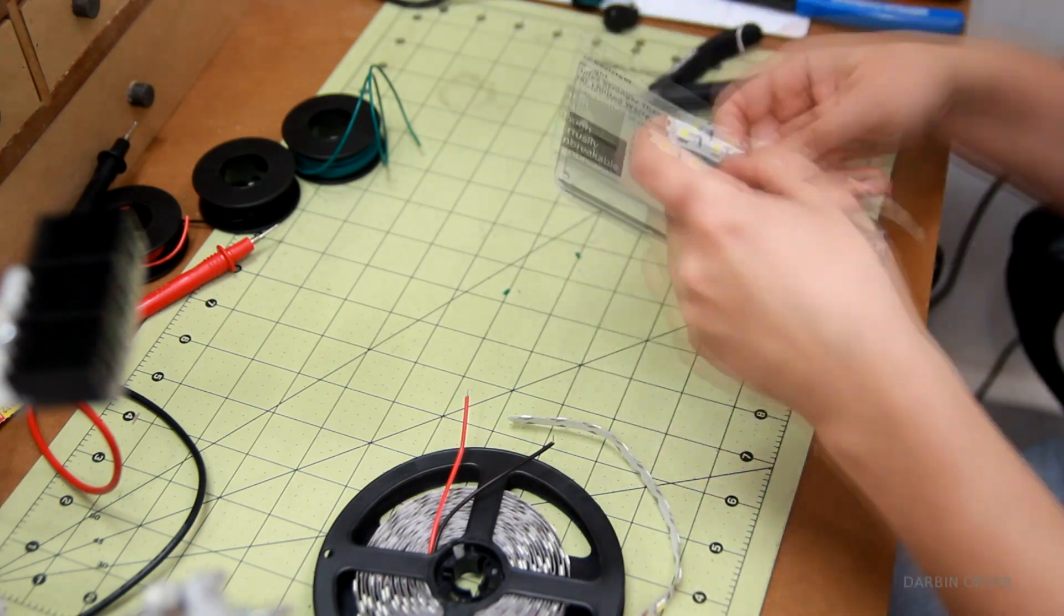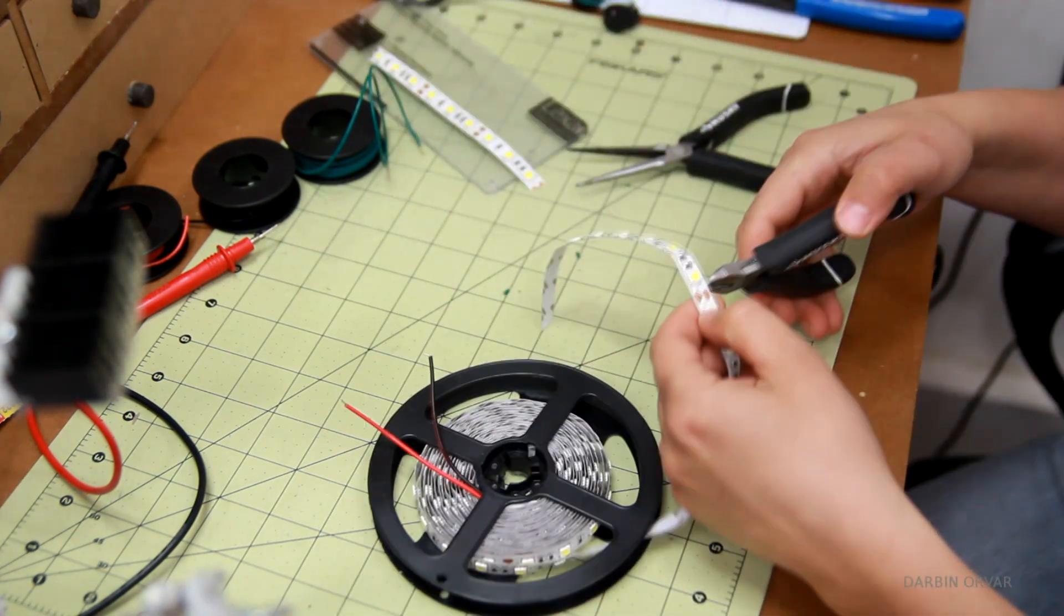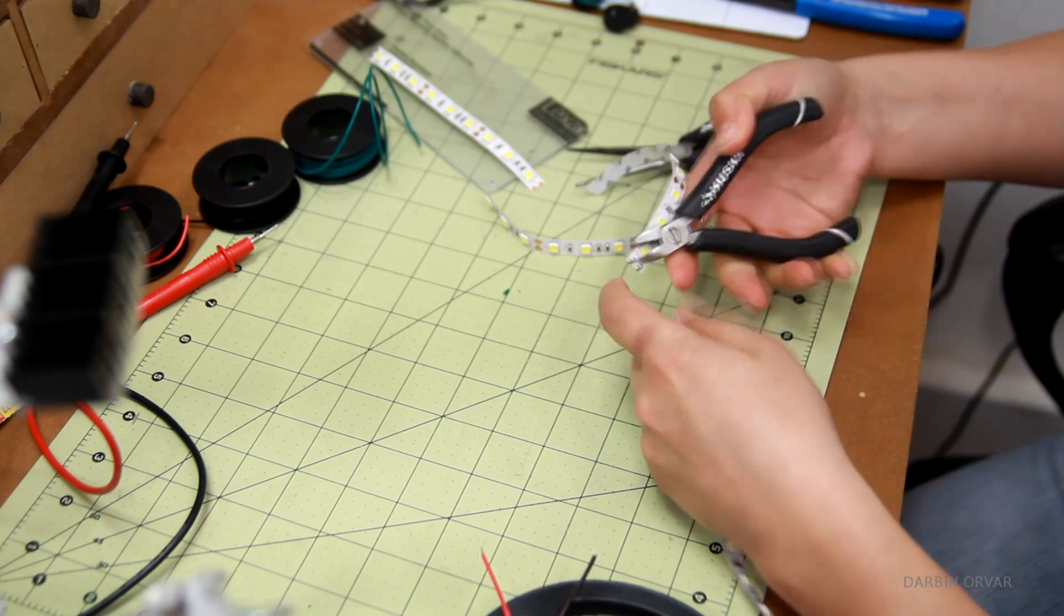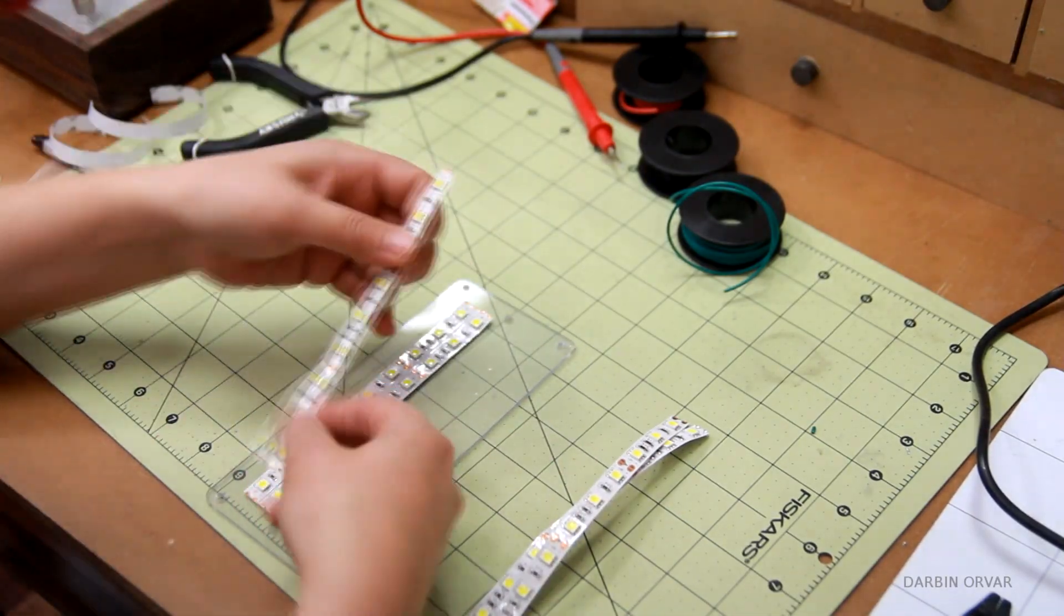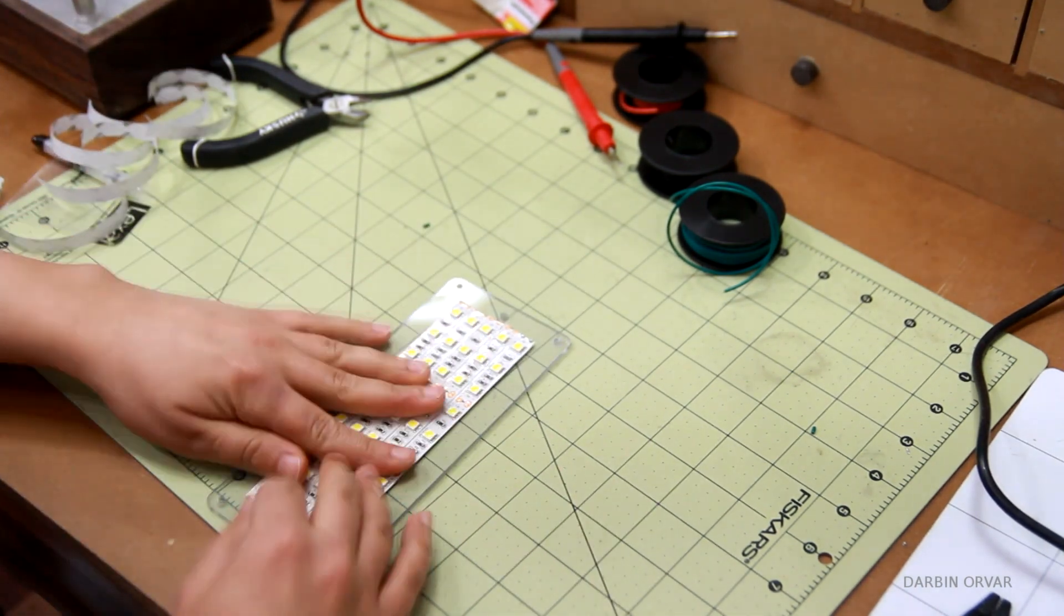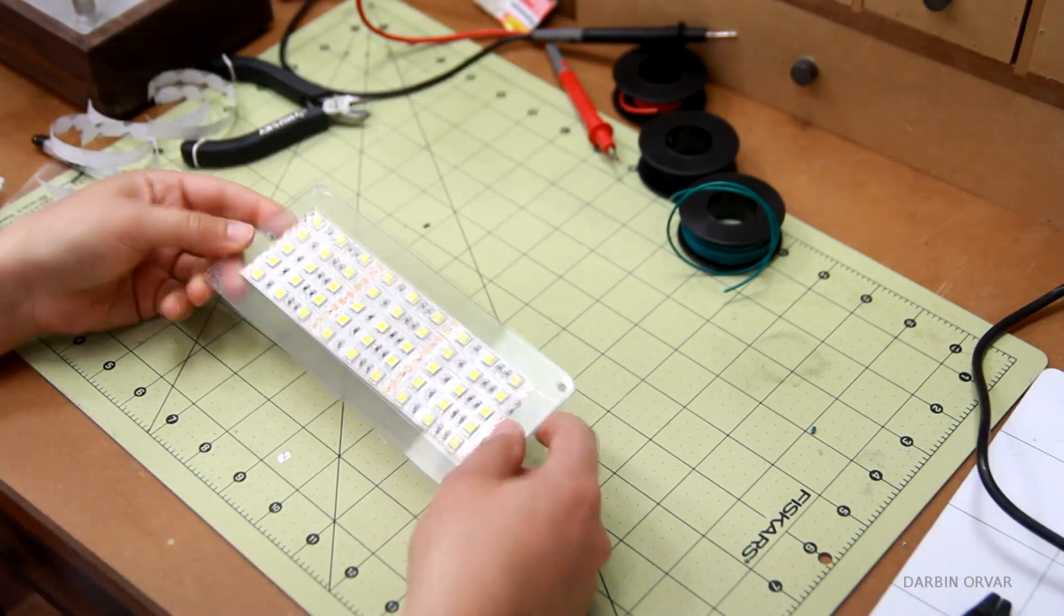Now for the actual lights, I'm using these 12 volt LED strips. So I'm cutting 5 strips, each with 9 lights. And the whole idea here is that I want a very distributed light when it's not focused like a flashlight beam. So just taking the plastic off so I can stick the light to the middle panel, which has the holes drilled through.